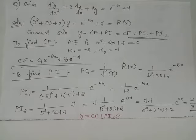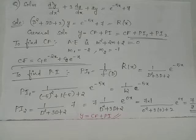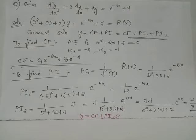We have 7 = 7·e^(0x). To find the complementary function, the auxiliary equation is m² + 3m + 2 = 0, whose roots are m1 = -2 and m2 = -1, which are real and distinct. Hence CF = c1·e^(-2x) + c2·e^(-x).